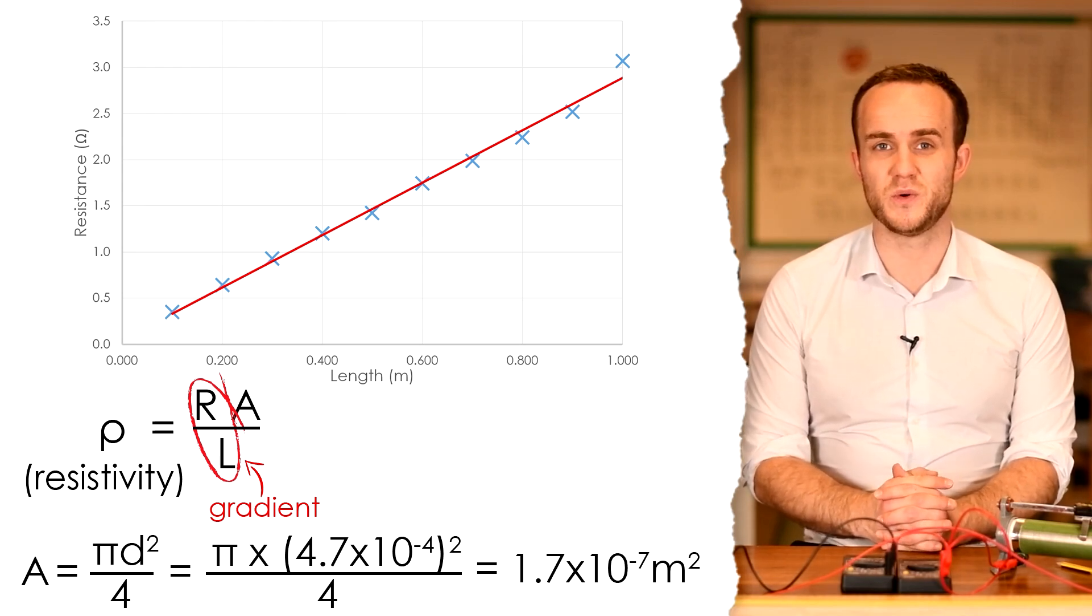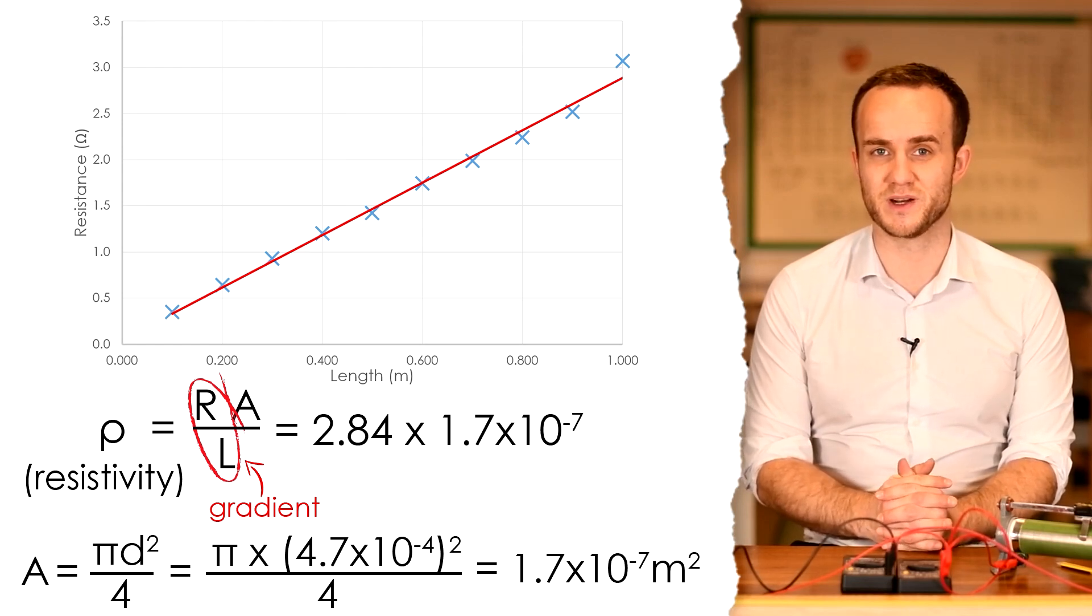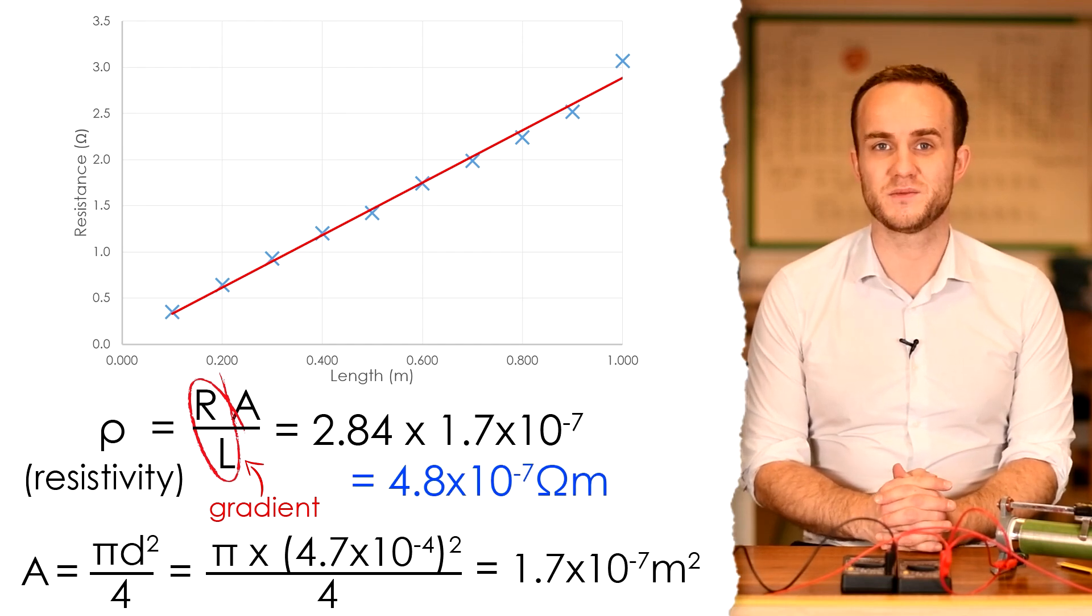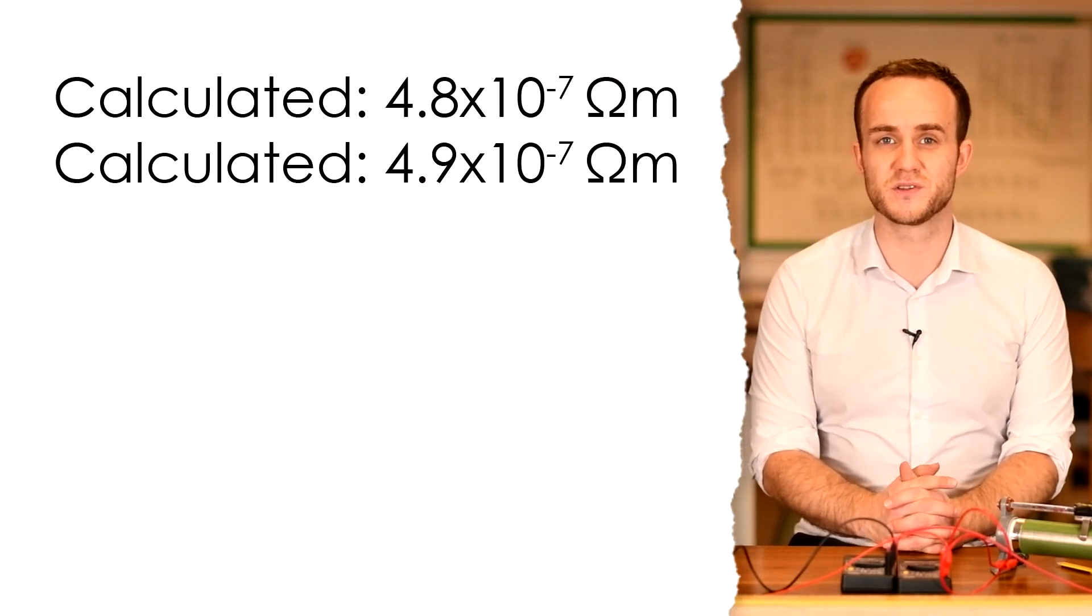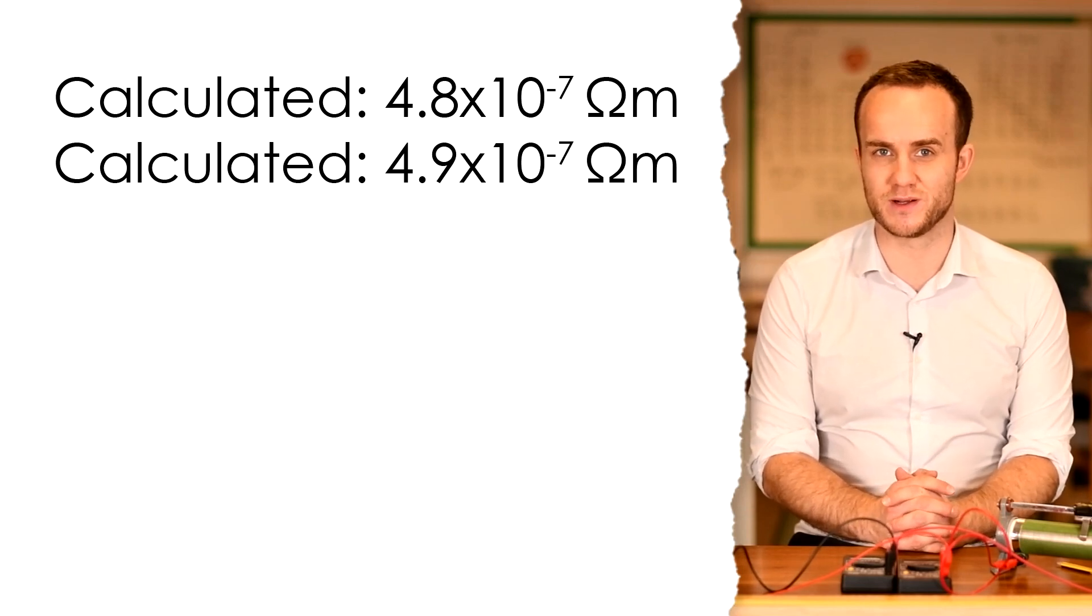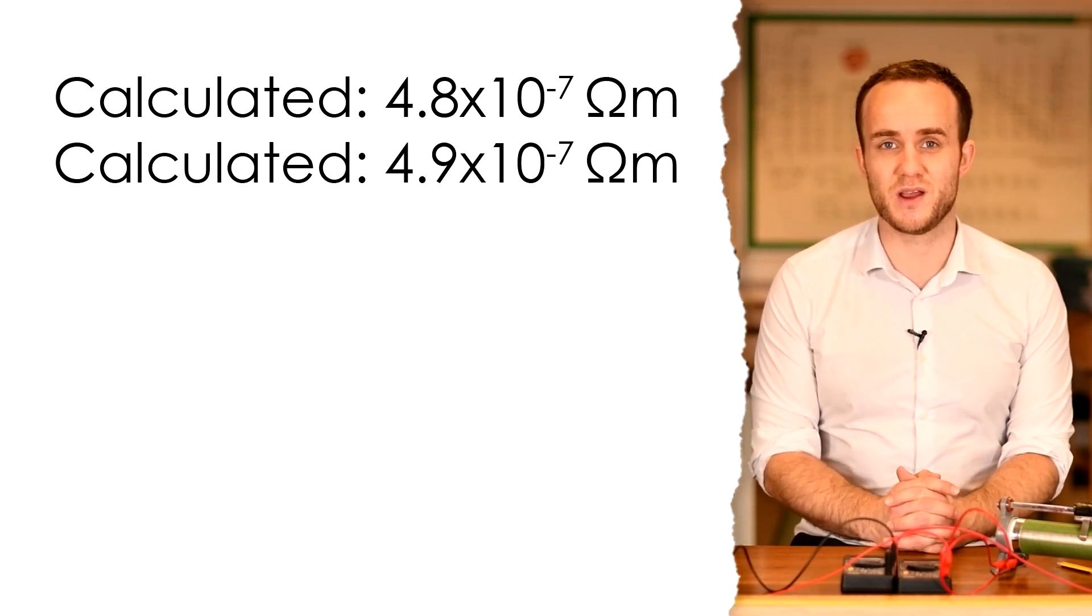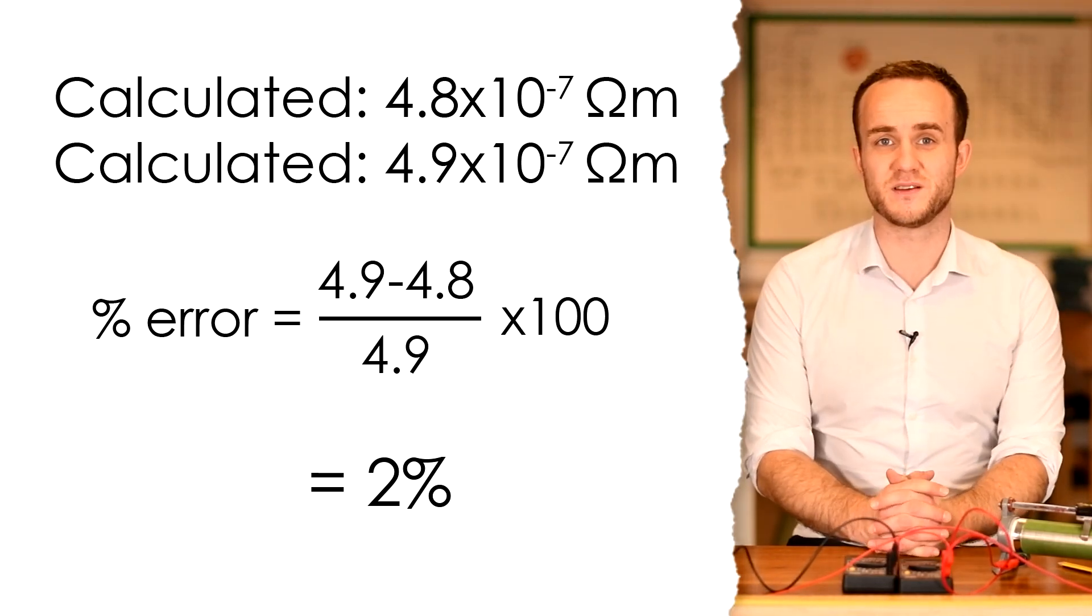So then to find resistivity, we take our gradient of 2.84 times that by our cross-sectional area, 1.7 times 10 to the minus 7. That gives us a resistivity of 4.8 times 10 to the minus 7 ohm meters. Now the accepted value for the resistivity of constantan is 4.9 times 10 to the minus 7 ohm meters. And so we were very, very close. We can find the percentage error in our value by taking the difference. So that's just going to be 0.1 divided by the original 4.9 and times by 100. That's only a percentage error of 2%.